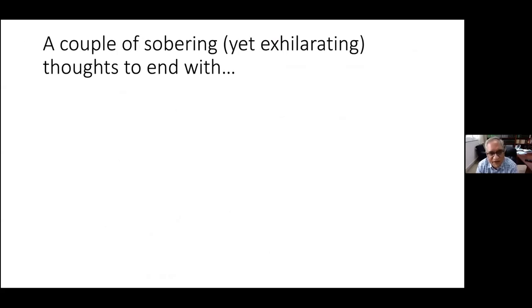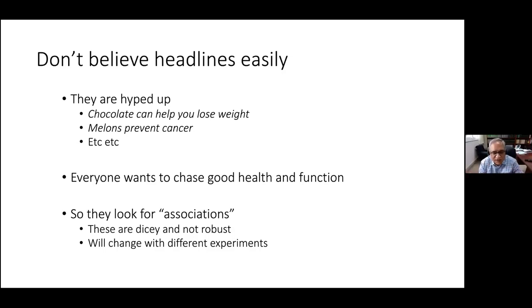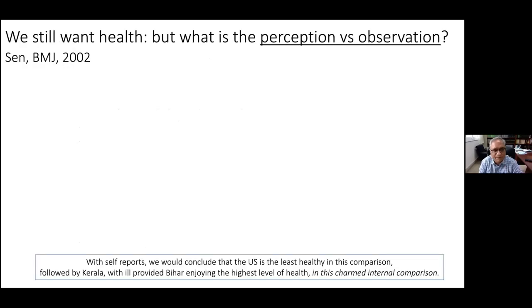I want to end with a couple of sobering thoughts. First, don't believe headlines about nutrition — 'chocolate can help you lose weight,' 'melons prevent cancer.' These are based on regression analysis and associations, not robust evidence, and they keep changing. One year coffee is good for you, the next it's bad. That's the problem when nutrition moves out of its reductionist frame and into the functionality frame — it hasn't got it right yet. Amartya Sen published an article in the BMJ in 2002, almost 20 years ago, on this topic.